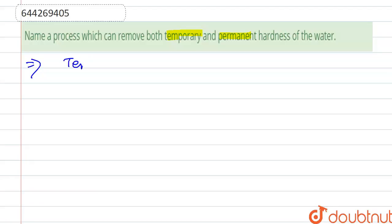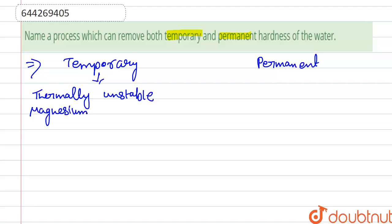So temporary hardness is generally caused by the thermally unstable magnesium hydrogen carbonate and calcium hydrogen carbonate.